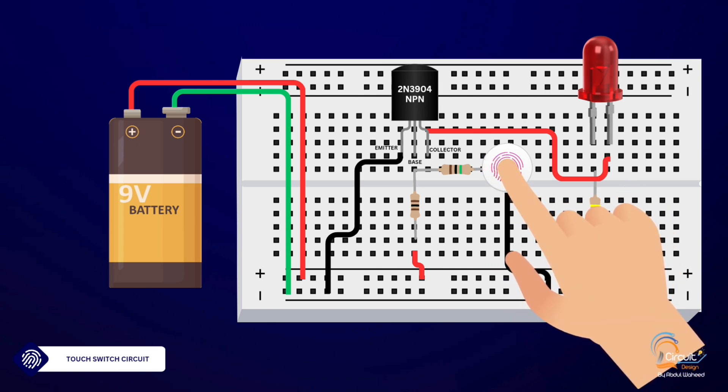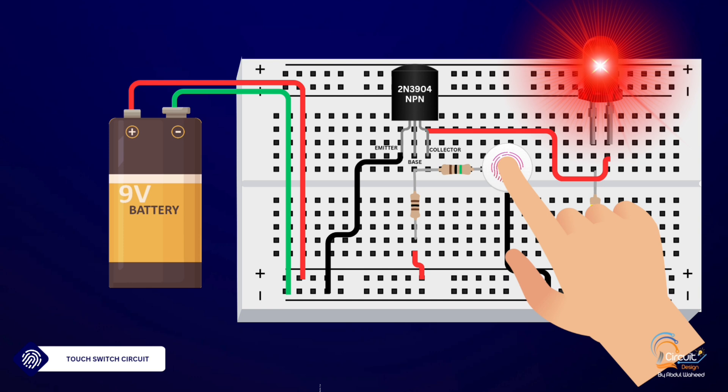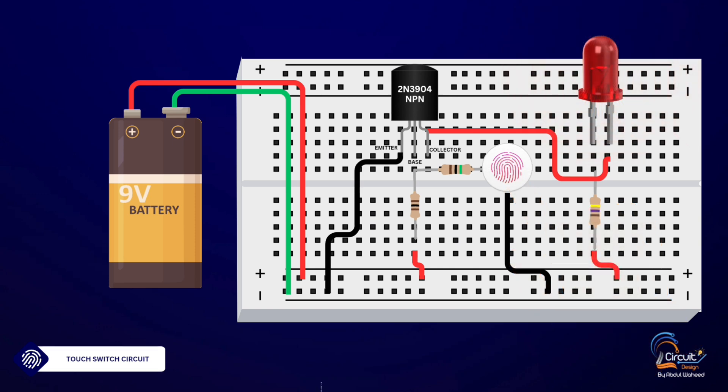Step 6: Testing the circuit. When you touch the touch plate, the LED should light up. Remove your finger, and the LED will turn off. If the LED doesn't light up, double check your connections and ensure your power supply is working.